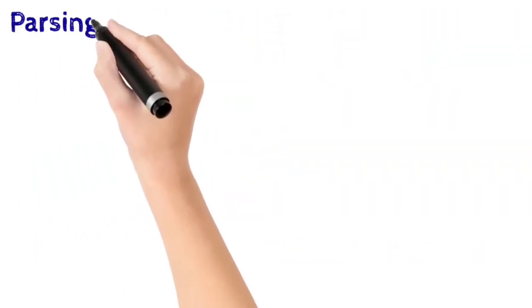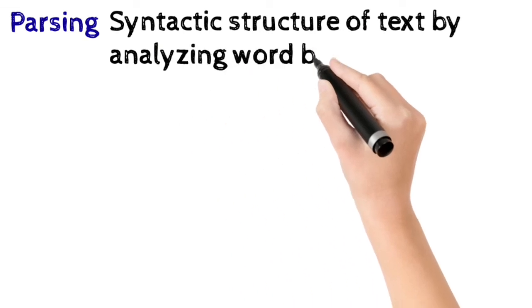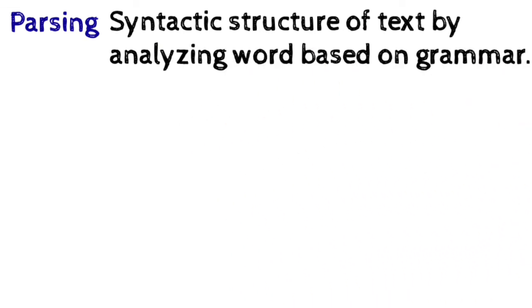And by that, the next text processing library is parsing. It is the process of determining the syntactic structure of a text by analyzing word based on the grammar. As humans, we are using grammar in our daily lives. Machine also needs to understand what is grammar, what are the tenses, present tense, past tense, future tense. So for that, parsing is used.